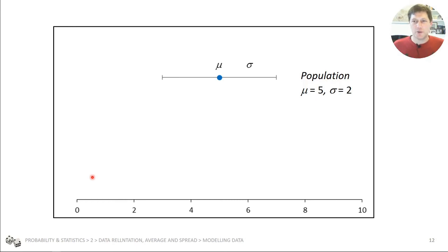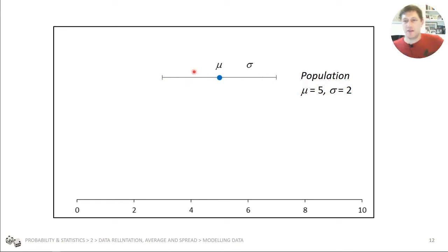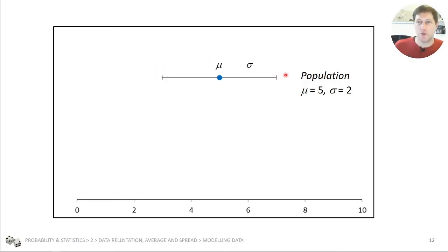Let's think about populations and samples with an example. This is a representation of a population — a normally distributed population with mean 5 and standard deviation 2. I've created some data sets from that population, like our experiment: this represents the average properties of all the steel in the world, and then we're taking 14 samples each time and looking at our particular measurements, comparing them to the overall population they came from.